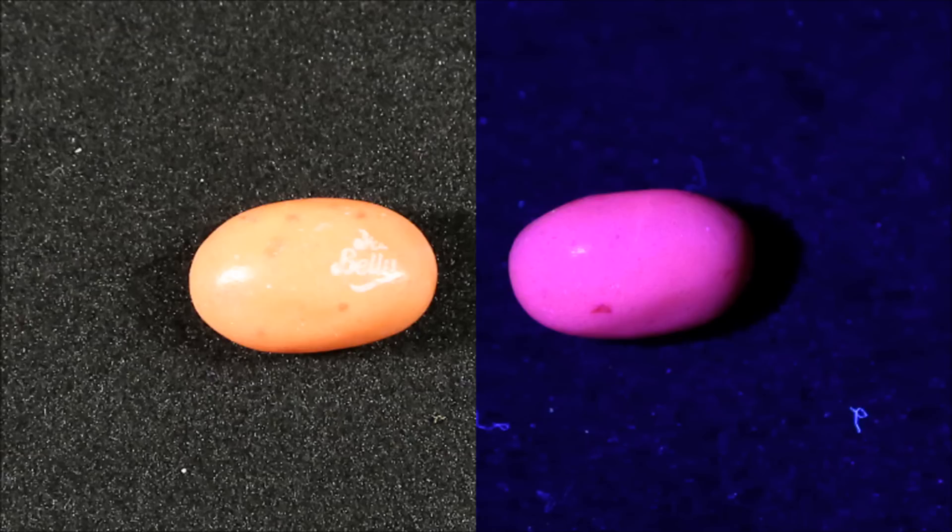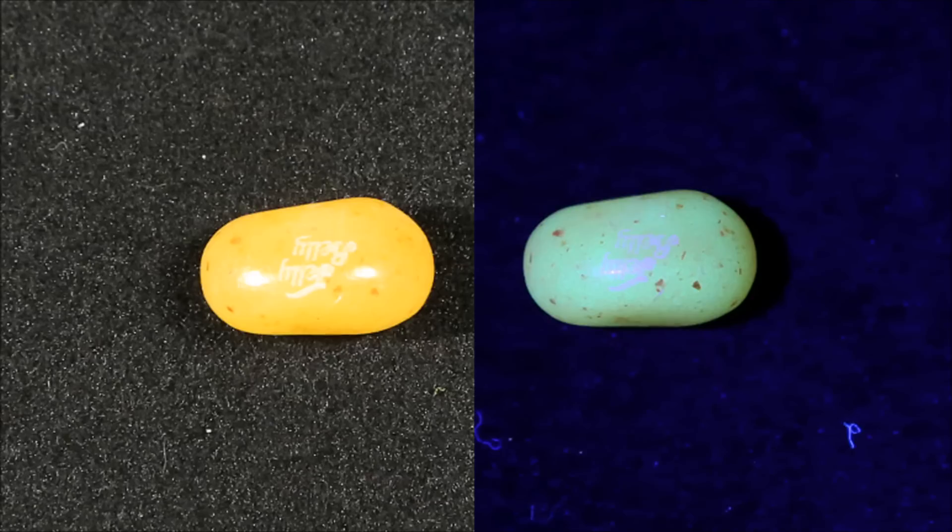Strawberry daiquiri becomes an intense hot pink. Under normal lighting, chili mango looks a lot like strawberry daiquiri. But instead of the hot pink under ultraviolet, we get a rather dull green.